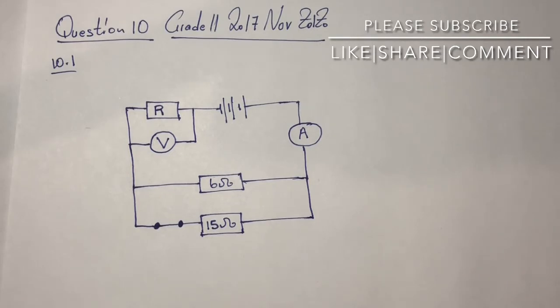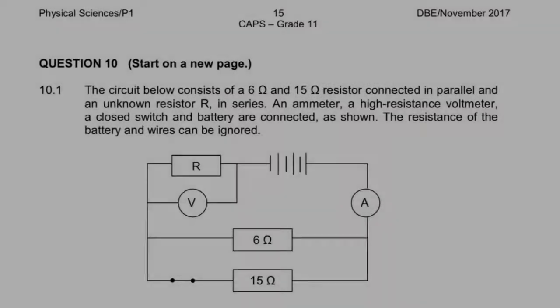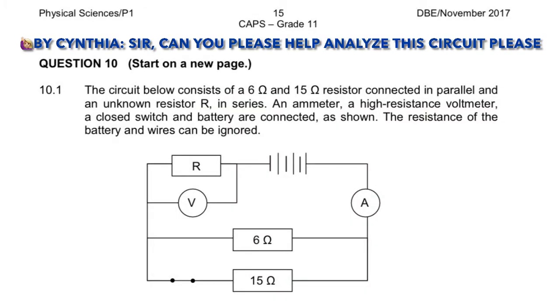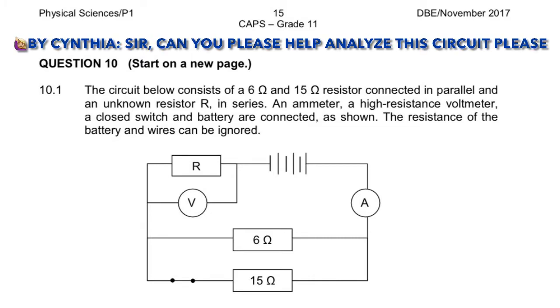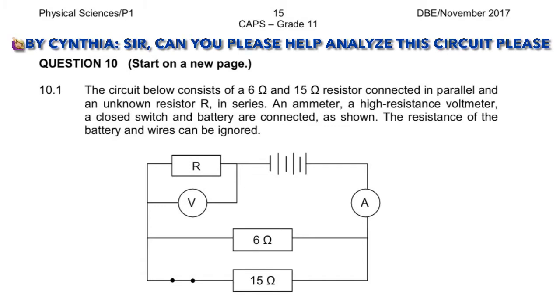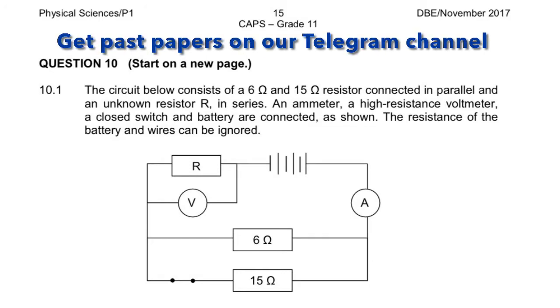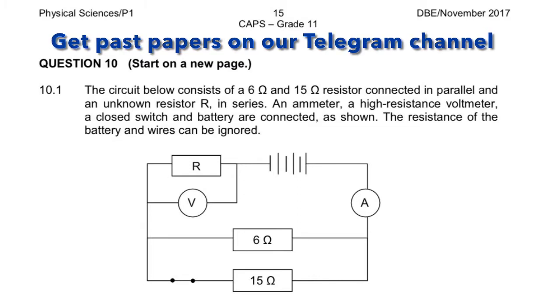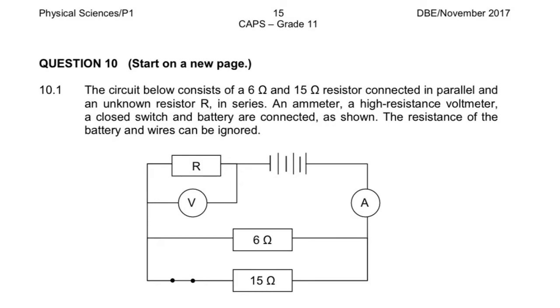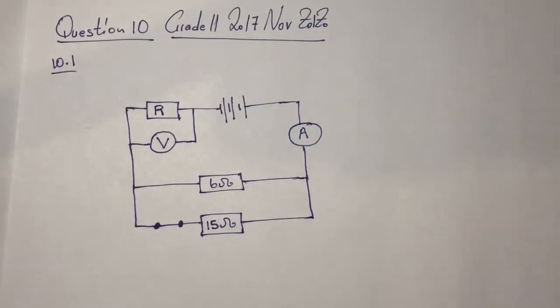The statement reads as follows: the circuit below consists of a 6 ohms and 15 ohms resistor connected in parallel and an unknown resistor R in series. An ammeter, a high resistance voltmeter, a closed switch and battery are connected as shown. The resistance of the battery and wires can be ignored. As you can see, we are given the diagram with almost all the information given in the statement.